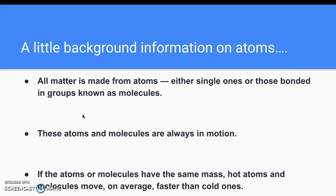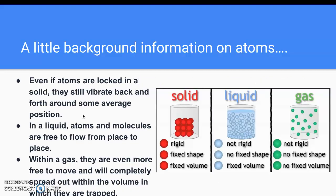A little background information on atoms. We know from past sections that all matter is made up of atoms. They either are comprised of single atoms bonded together or atoms bonded in groups known as molecules. In either case, these atoms or molecules are always in motion. And in general, hotter atoms or molecules are going to move faster than colder ones.